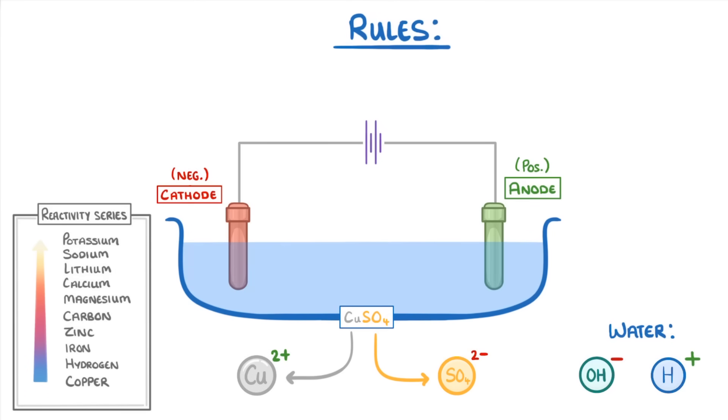If we think about the negative cathode first, it could either discharge the hydrogen ions or the copper ions. So all we need to do is check our reactivity series, and because copper is lower down on the list and so less reactive, the copper ions will be the ones that get discharged. So they'll gain 2 electrons from the cathode and form pure copper.